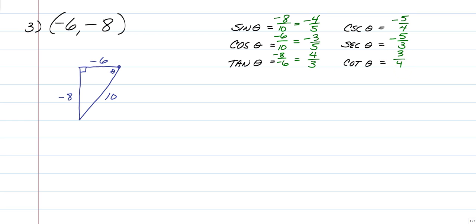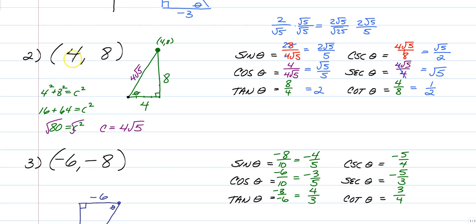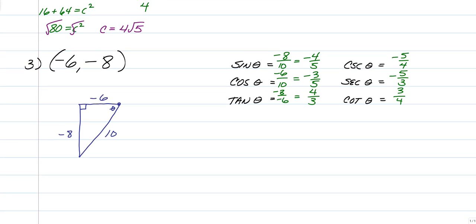Tangent is going to be positive in the third quadrant because we're doing sine divided by cosine, and a negative divided by a negative is positive. Whenever you have one or two of these negative, you're going to have two trig functions be negative and only one will be positive. If they are both positive, then all three will be positive. So that's it for coordinate trig.